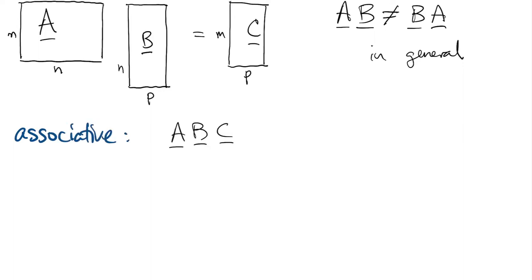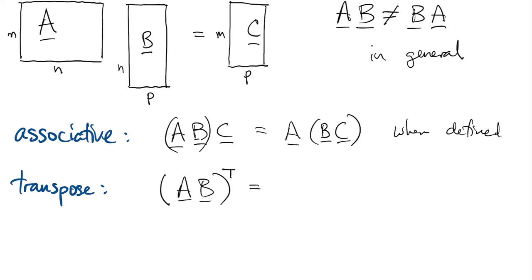Fortunately, we do have a number of other useful identities and properties. The associative property does hold, so the order of operations when we do multiplications doesn't matter. That turns out to be incredibly useful. There's also an identity involving the transpose. The transpose of a product is the product of transposes in the opposite order.